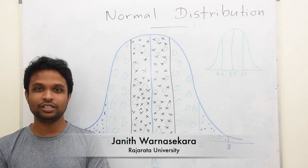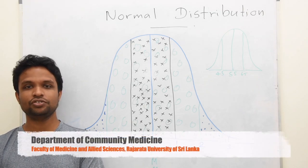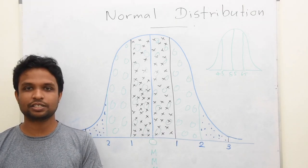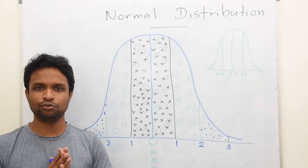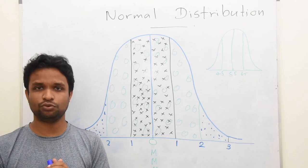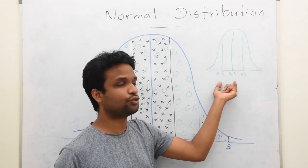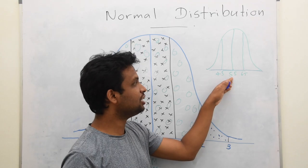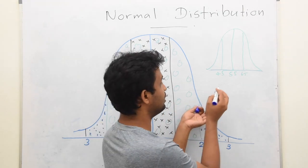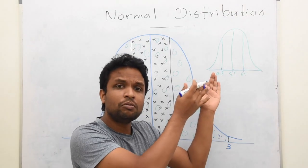Welcome to the lecture on Normal Distribution. During the past few lectures, we have mentioned Normal Distribution and Skew Distribution. Normal distribution is a general term for bell-shaped symmetrical distribution. For example, this is a distribution of marks of a few students where the mean is 55 marks and standard deviation is 10. So we mark 65 and 45 on the x-axis. This is a normal distribution.